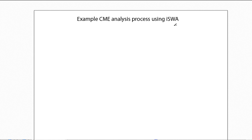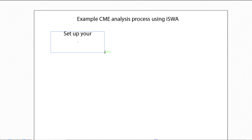What I will do here is generate a flowchart that gives you an example process for detecting and analyzing coronal mass ejection events, and then I will show you a real-life example of this process using the products available through the ISWA system. The first step you need to carry out is to set up your ISWA displays. This is the first necessary step to get you going.